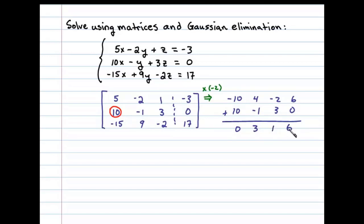We'll use this to replace the second row. Next we want to replace the first element of the third row with 0. To do that we can multiply the first row by 3, and that'll leave us with 15, -6, 3, and -9.